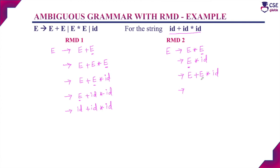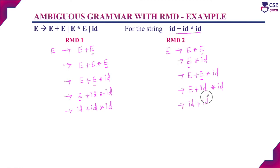Now there are two non-terminals. Choose the rightmost non-terminal and apply E → id. Only one non-terminal remains; apply E → id. Now we have derived the same string using a different rightmost derivation. There are two different rightmost derivations for deriving the same string id + id * id.